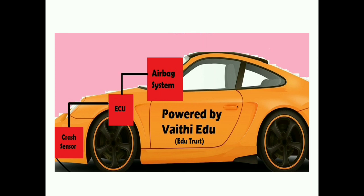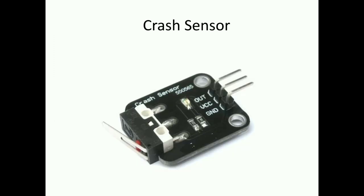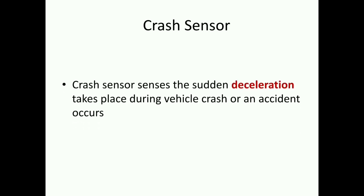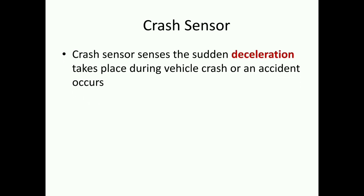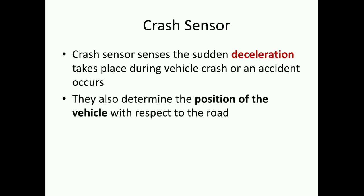Before going into the airbag, you want to understand what modules or components are present in the airbag system. The complete system consists of three components: the crash sensor, the ECU, and the airbag system. First, the crash sensor — this is how it looks, with three pins: input, output, and ground. The crash sensor senses the sudden deceleration that takes place during a vehicle crash or accident, and also determines the position of the vehicle with respect to the road — whether it's on an incline, downhill, or a normal road.